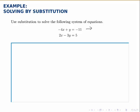So solving for y here, I get y equals 4x minus 11 by adding the 4x to both sides. Now this tells me that wherever I see y, I can replace it with 4x minus 11.